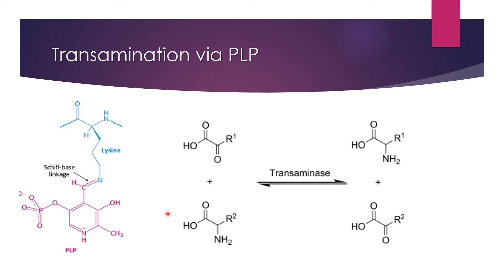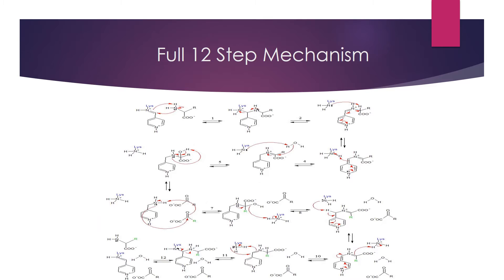In the active site of transaminase, which performs transamination, PLP forms a Schiff base linkage with a lysyl residue — more specifically, via an epsilon amino group. For the mechanisms I'm going to ignore the phosphate, the methyl, and the hydroxyl, and just focus on the ring and the amino group attached. Here is the full 12-step mechanism, which you could also draw in more or fewer steps — I found 12 steps to be convenient.